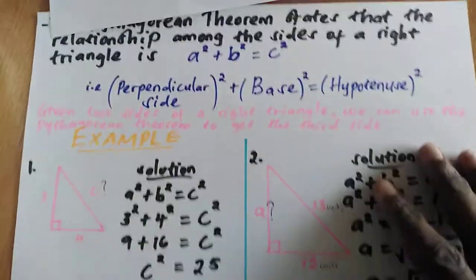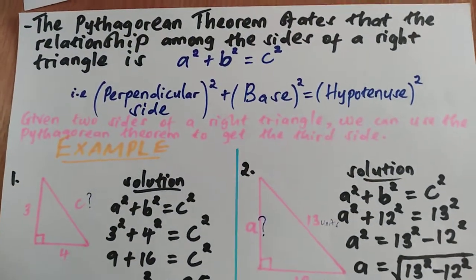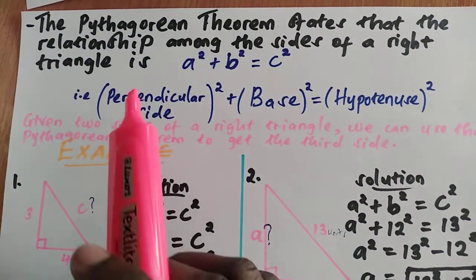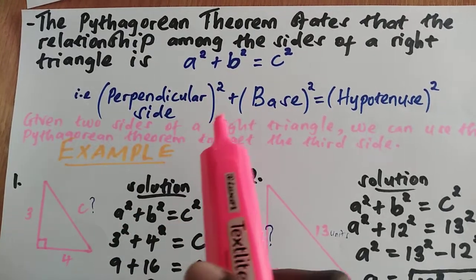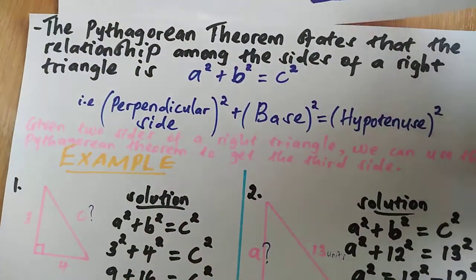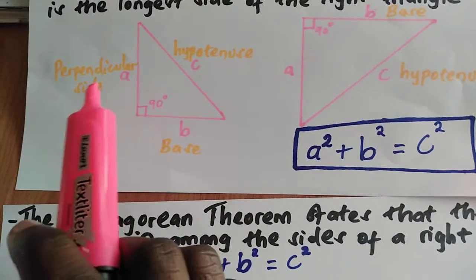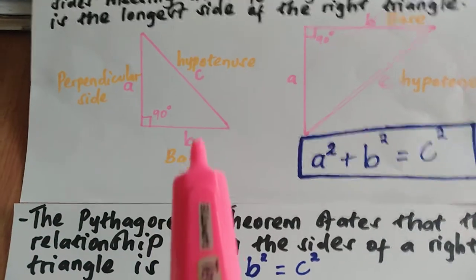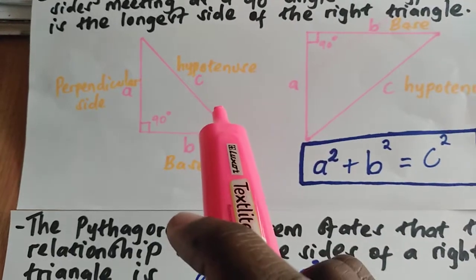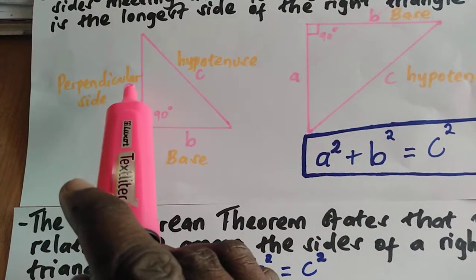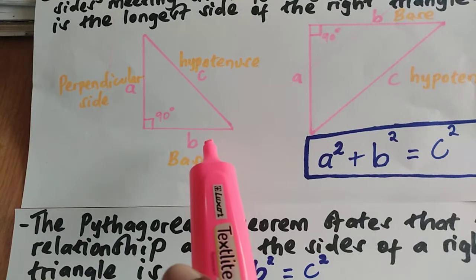The Pythagorean theorem states that the relationship among the sides of a right triangle is a squared plus b squared equals c squared. If we draw the right angle triangle and name the perpendicular side as a, the base as b, and the hypotenuse as c, then the Pythagorean theorem states that the square of this side plus the square of this side equals the square of this side.